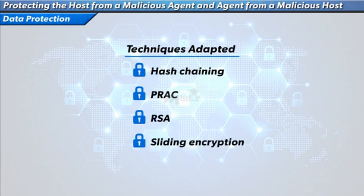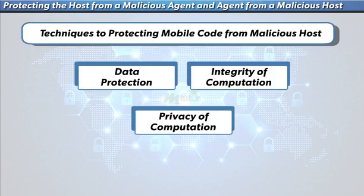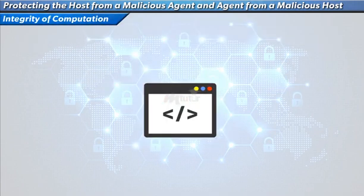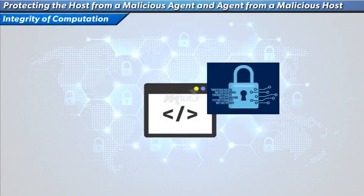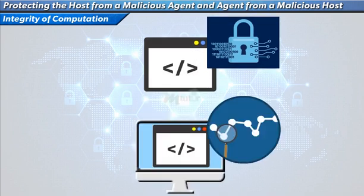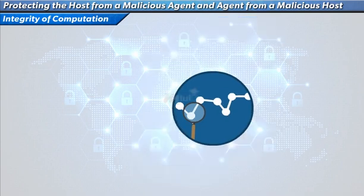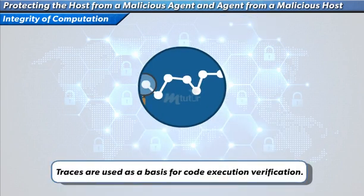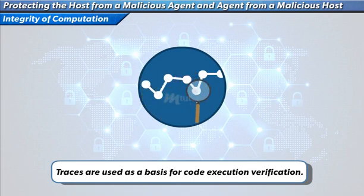The next technique is the integrity of computation. A mobile code can be protected using a cryptography-based integrity proof. These proofs are called traces, which are collected during the execution of an agent. The traces are then used as a basis for code execution verification — that is, to check whether the code executed its designated tasks properly.